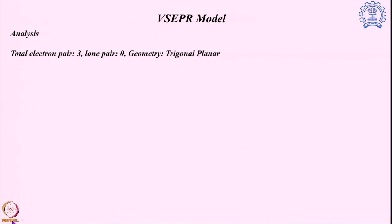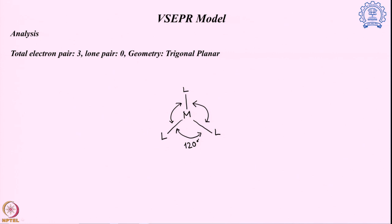Moving to a system with three electron pairs and none of them lone pairs: we have three ligands represented by lines for the bond pairs. In three-dimensional space, we can arrange the ligands such that they are in the same plane and 120 degrees apart from each other. That is known as the trigonal planar structure — present when a metal is bound to three ligands with three bond pairs and no lone pairs.